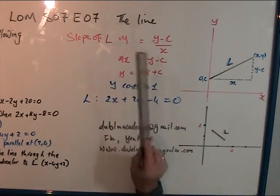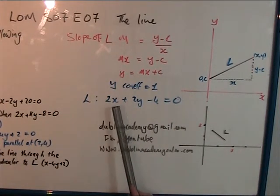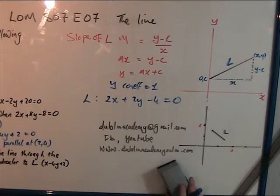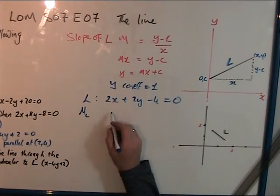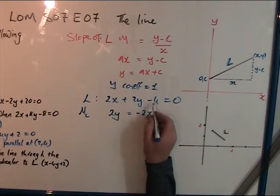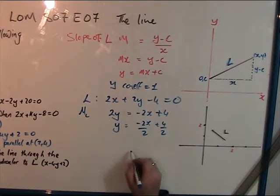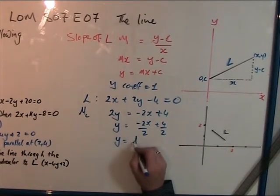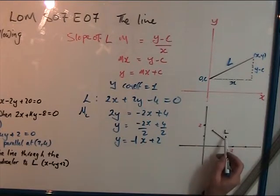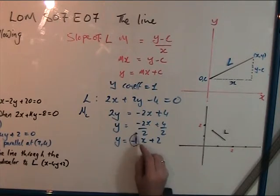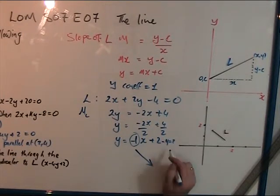Remember that the Y coefficient must always equal one. For example, with 2X plus Y, to find the slope M of L, I manipulate the formula: Y equals minus 2X plus 4 all over 2, giving Y equals minus 1 times X plus 2. So the slope is minus 1. A negative slope means the line is going down. It cuts the Y axis at 2.